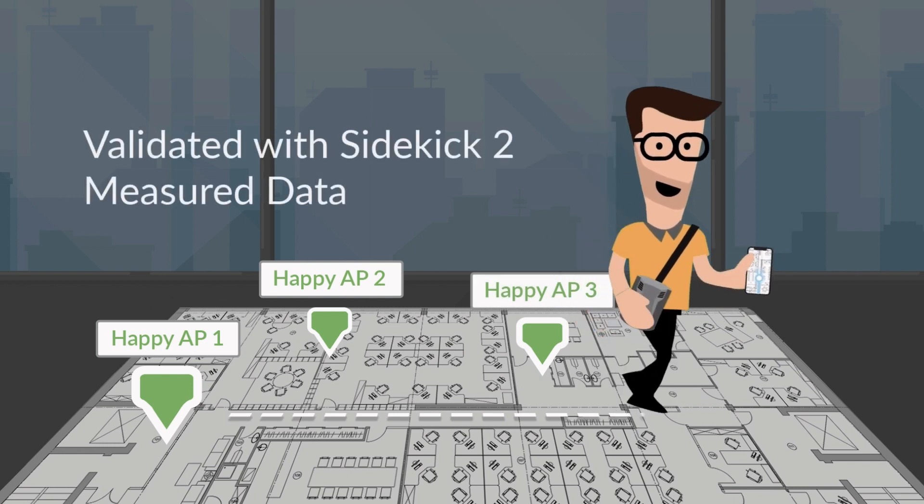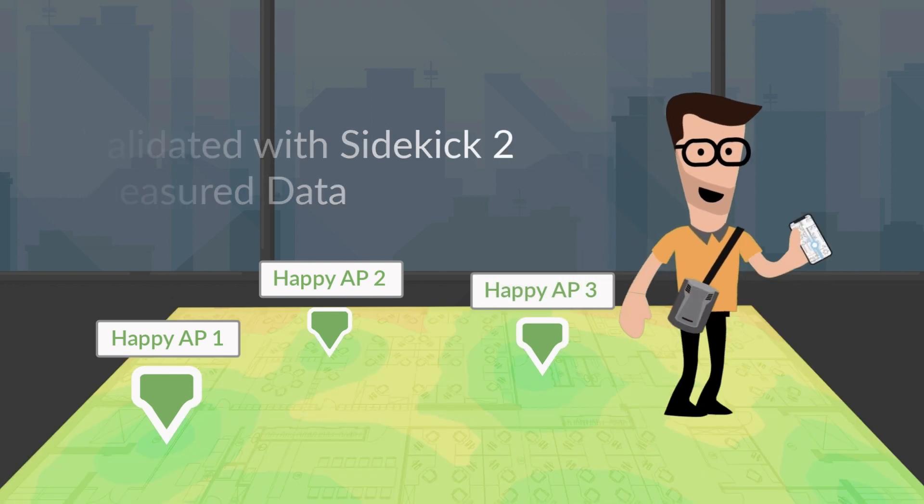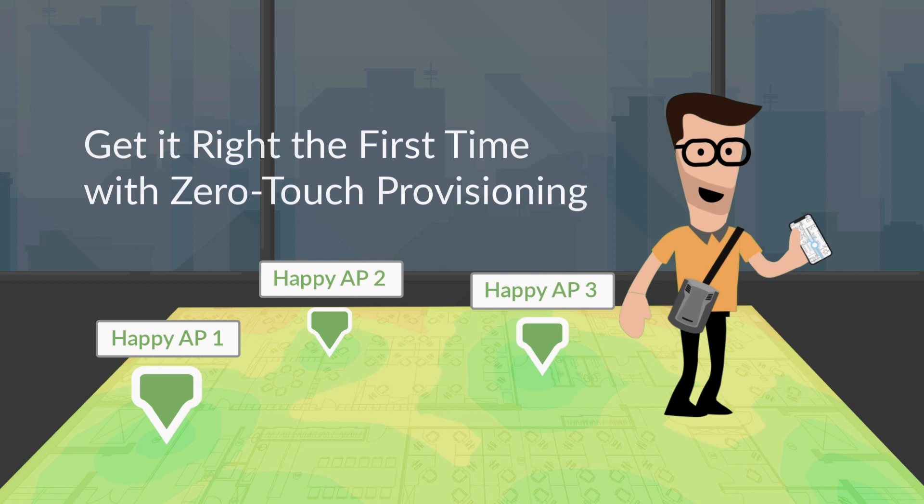But it also tests every square inch of your network for coverage gaps, capacity issues, and any channel interference that may be slowing down your Wi-Fi.